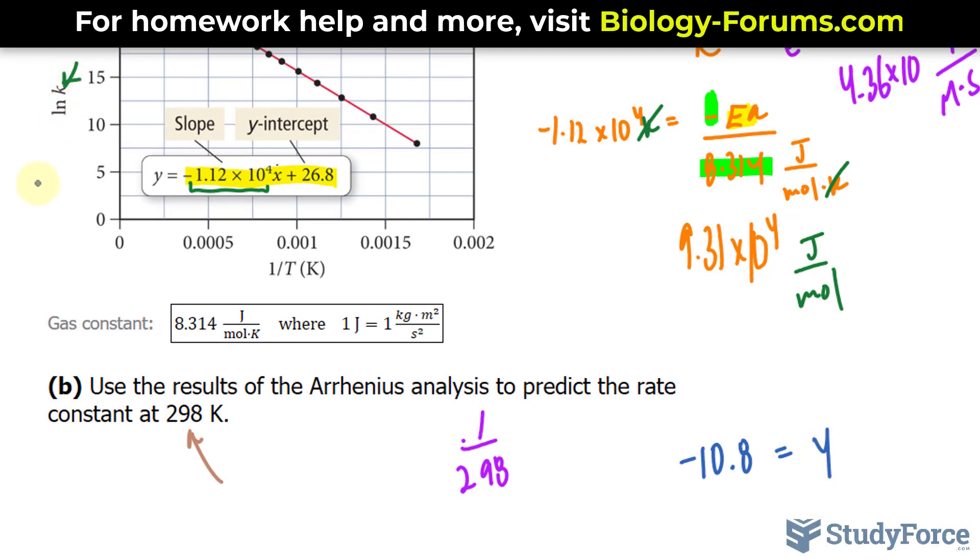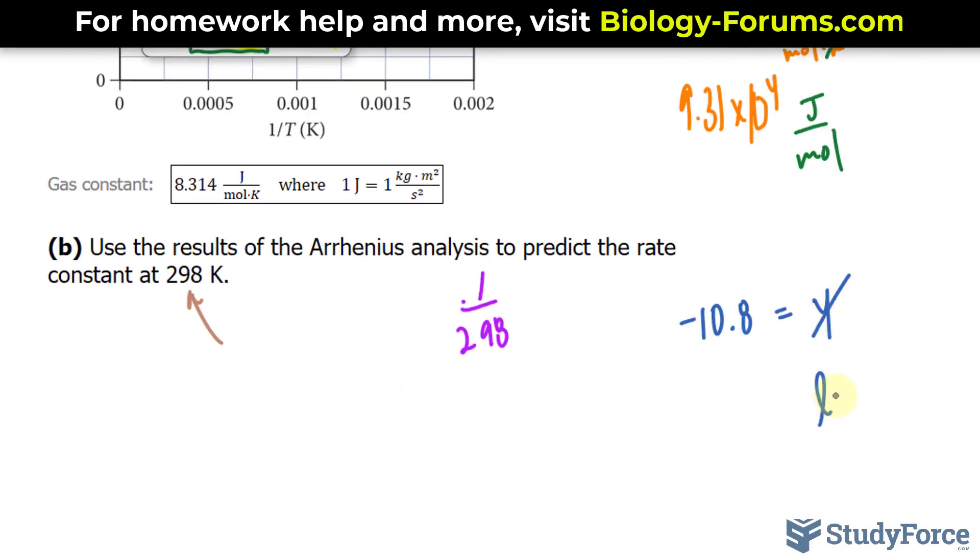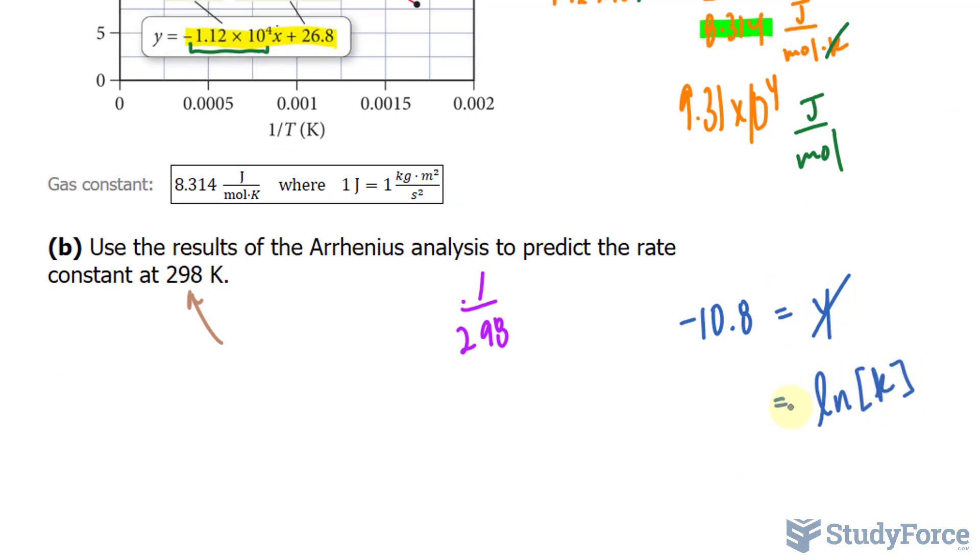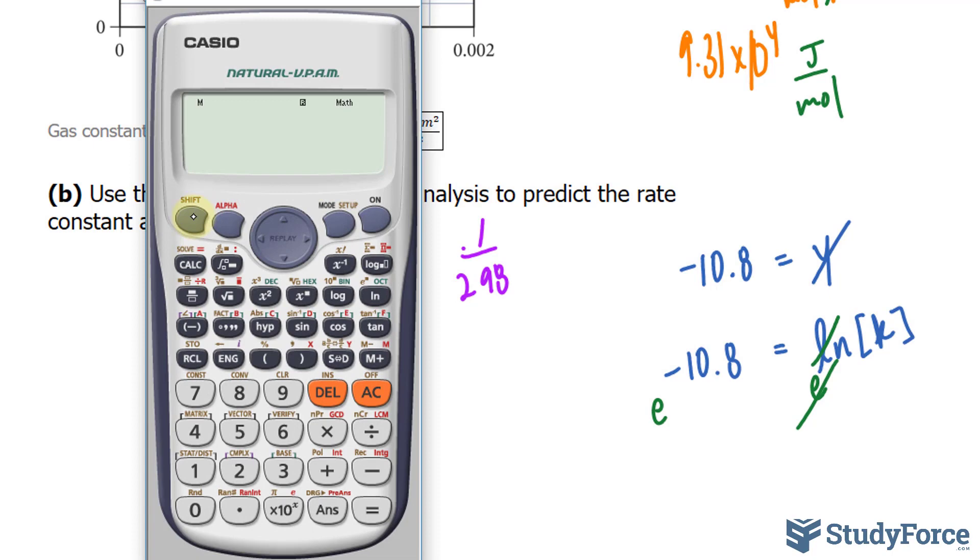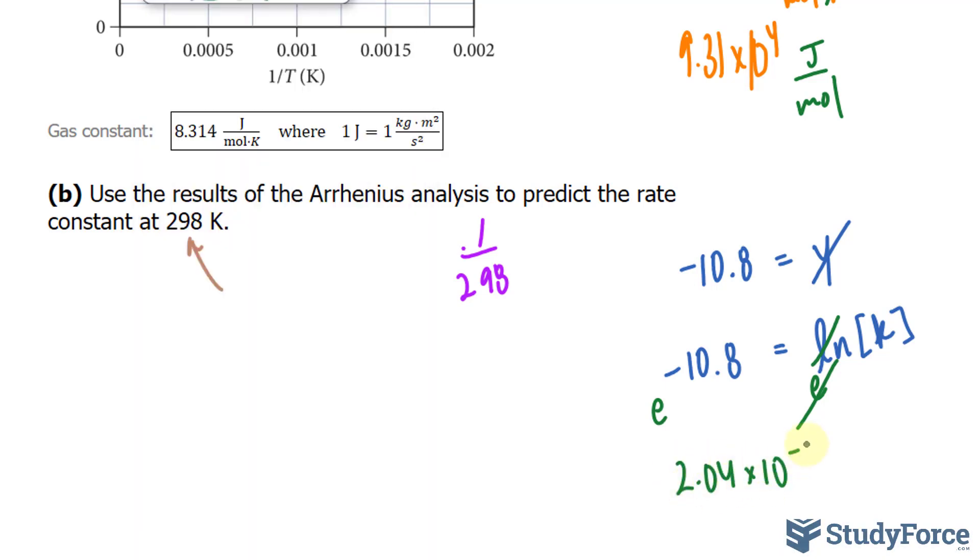Now remember our y-coordinate is ln K. So at some point, we had our constant, and we took the natural log of that constant, and we ended up with negative 10.8. Now to reverse this process, we raise both sides to the base E. That cancels out the ln. And now using our calculator, we can find out what it is. Negative 10.8. And we end up with 2.0 to 3 significant figures, 2.04 times 10 to the power of negative 5. And the units should be 1 over moles times seconds.